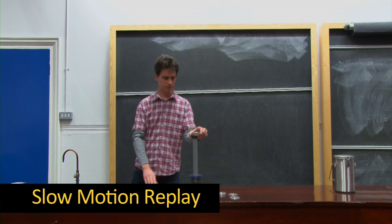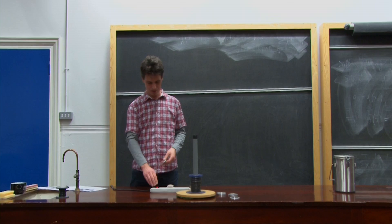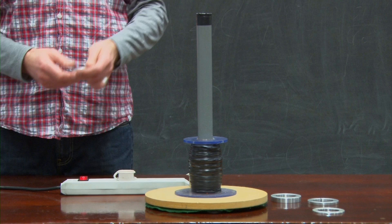Like all currents, this induced current will produce a magnetic field of its own. Now, Lenz's law states that the direction of any magnetic induction effect is such as to oppose the change producing it.